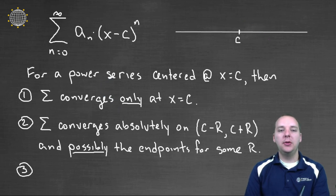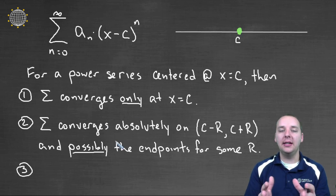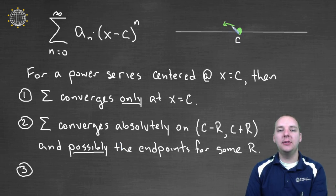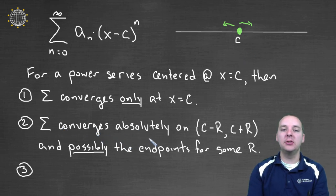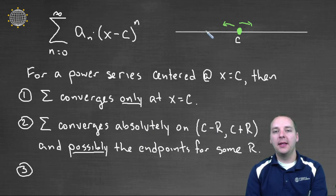Number two. This is, in my opinion, probably the most common situation. It converges at the center, but usually there is some radius, some reach, some distance that you can move to the left of c and to the right of c, and it will converge absolutely even. That's a stronger type of convergence. It will converge on c minus that radius, up to c plus that radius.